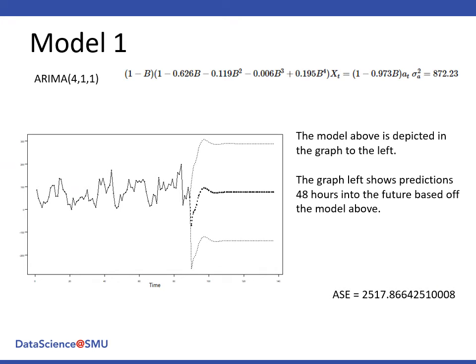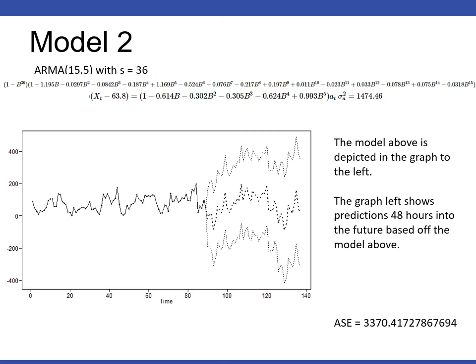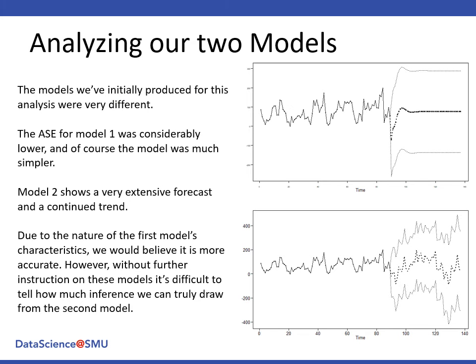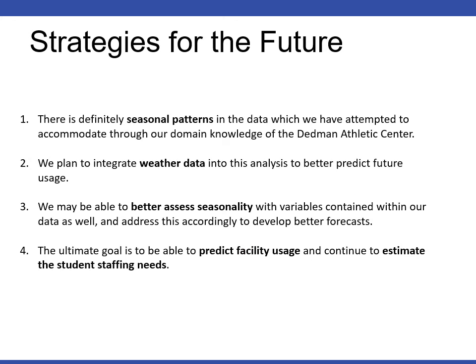Our first model's prediction did okay, with an AIC of around 2,000. Our second model, with that seasonal component, ended up being a 15,5 with a higher AIC. Looking at those, we're going to stick with our first model — first for simplicity reasons, and second because the AIC is so much lower.